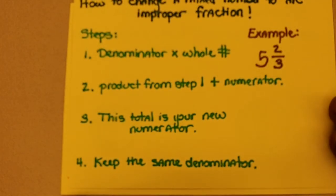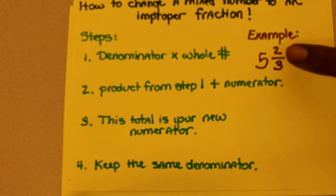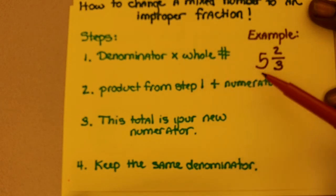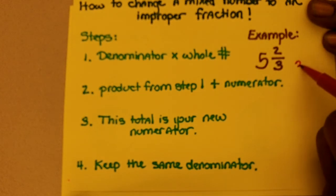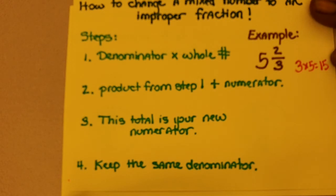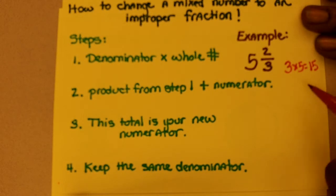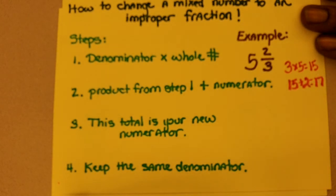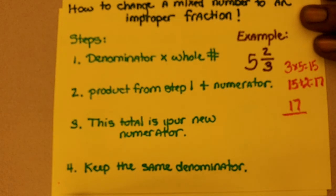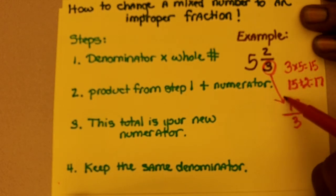Now, how to change a mixed number to an improper fraction — going backwards. We have a mixed number five and two-thirds and we want to change that to an improper fraction. You take the denominator and multiply it by the whole number. In this case, three times five equals fifteen. Step two: take that product — fifteen — and add the numerator, which is two. That's seventeen. Step three: seventeen is your new numerator. Step four: keep the same denominator, which was three. So five and two-thirds converts to seventeen-thirds.